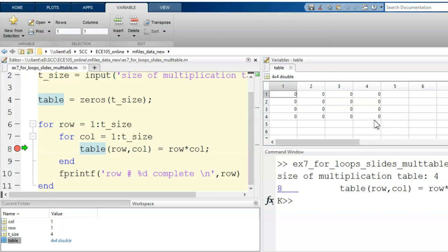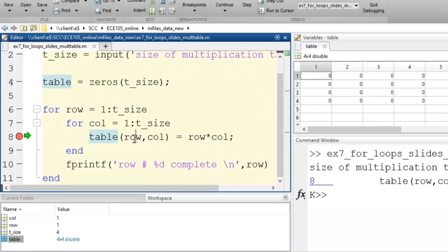Now, I can predict what will happen when I run this next line. Row equals 1 and column equals 1, so this statement would first multiply 1 times 1 and then store that result to index 1, 1 in the table. I click continue and we see that this is exactly what happens.